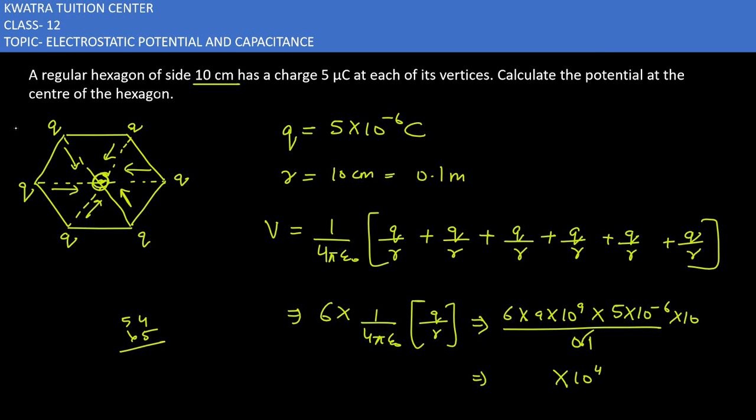270,000 or 2700k. In standard form, the decimal should come after the first digit: 2.7 × 10^6 volts. This means the potential at the center of the hexagon is 2.7 × 10^6 volts.